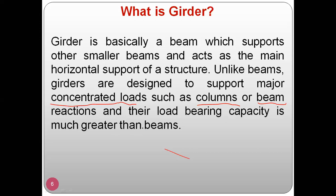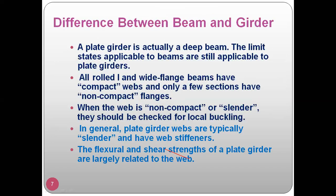Girders will have majorly concentrated loads rather than UDL loads, because they support columns or beams in their direction. A girder must be designed for point loads — concentrated loads from columns or beam reactions. Beams on the other hand are designed for UDL loads. That is how beams and girders are defined and differentiated.